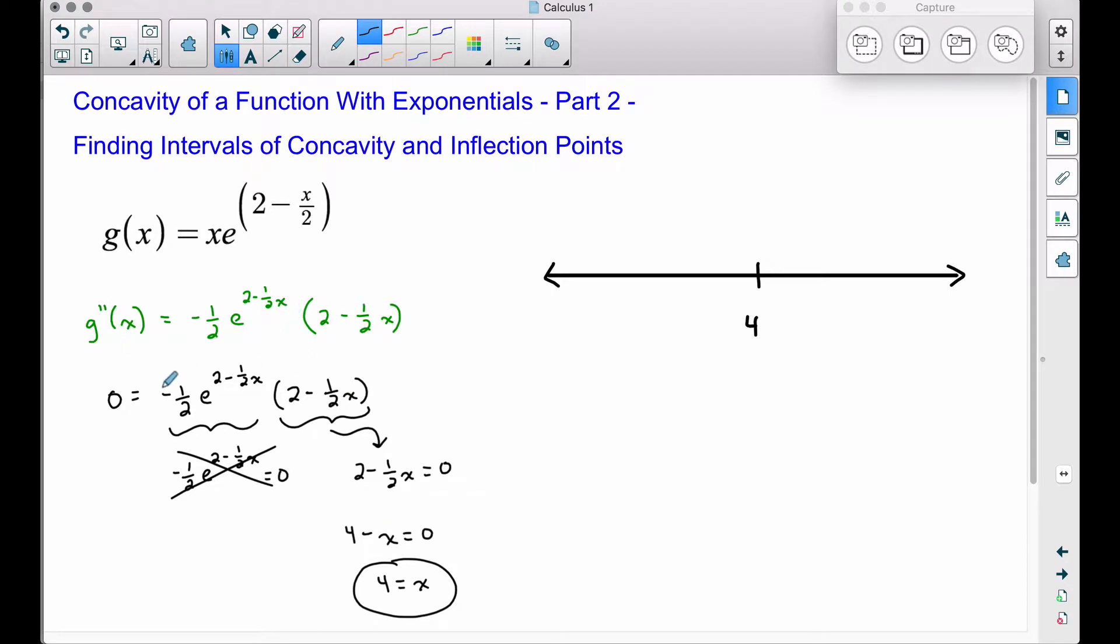So here's our second derivative. We set it equal to zero in an earlier video, and we found when x is equal to four, the second derivative is equal to zero. This is the only value. Now this function and the second derivative and the first derivative are defined for all values of x. So this is the only spot we have to test for concavity, and ultimately, maybe we have some inflection points.